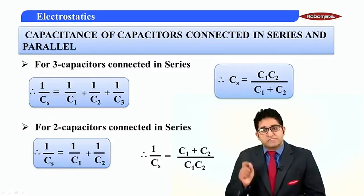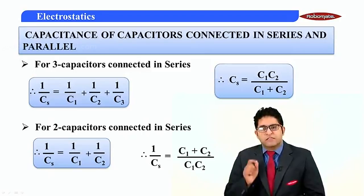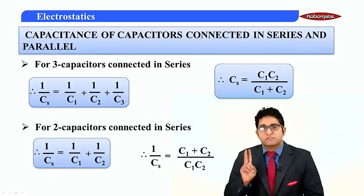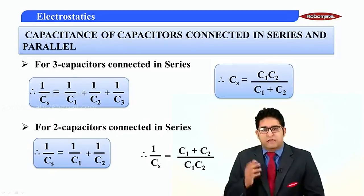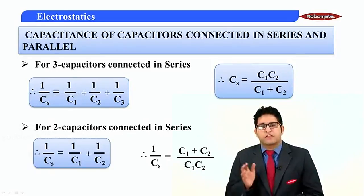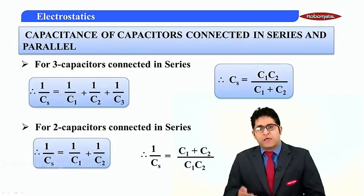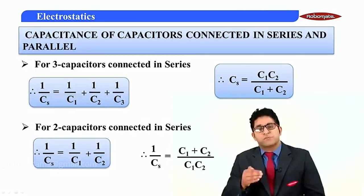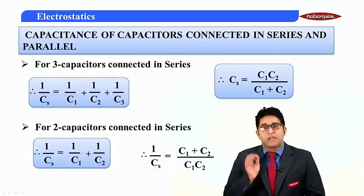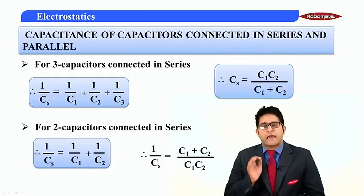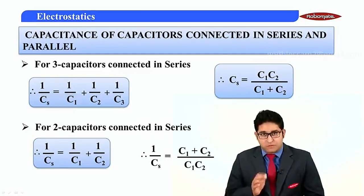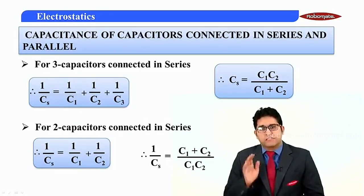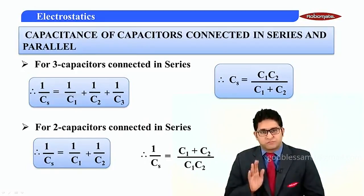Taking the reciprocal, we get Cs = C1·C2 / (C1 + C2). This is the equivalent capacitance for 2 capacitors connected in series — it is the product of the two capacitances divided by their sum. This formula is applicable for 2 capacitors only, not for multiple capacitors, as the equation changes.